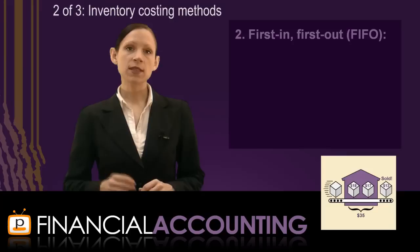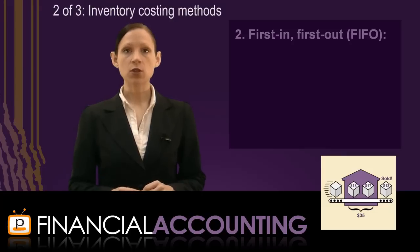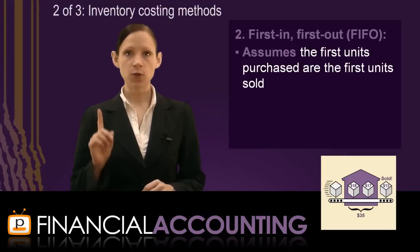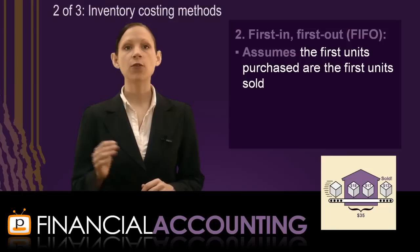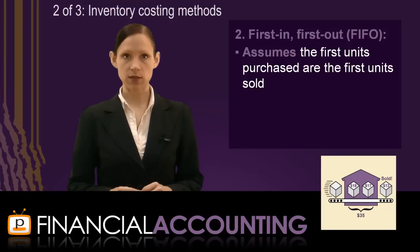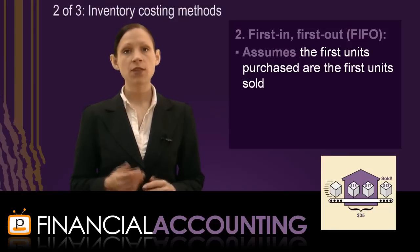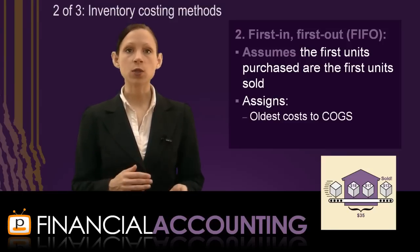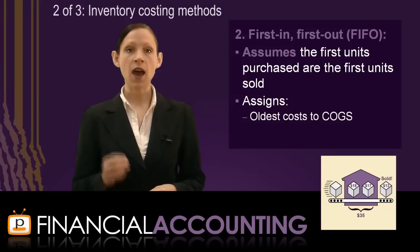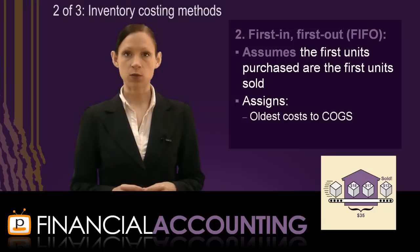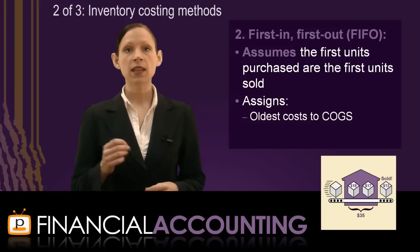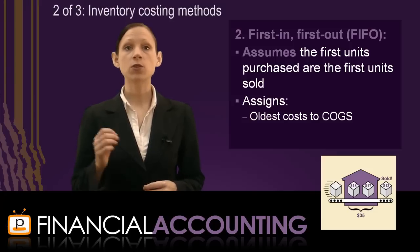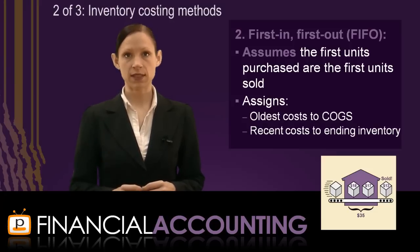The First In First Out, or FIFO method, assumes that the first units of inventory purchased are the first units to be sold. Therefore, at each sale, the cost of the oldest purchases are assigned to cost of goods sold, leaving the cost of the most recent purchases in ending inventory.